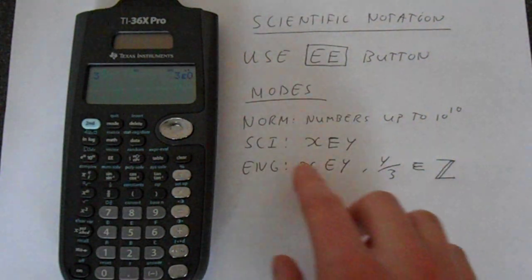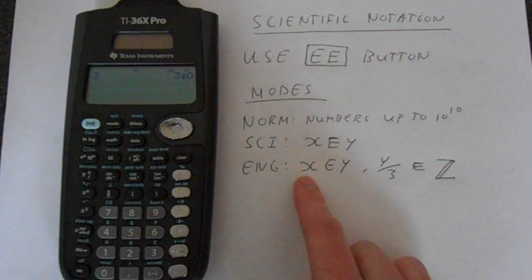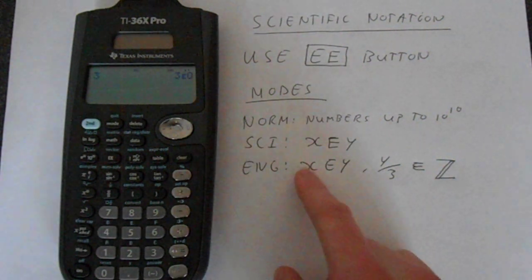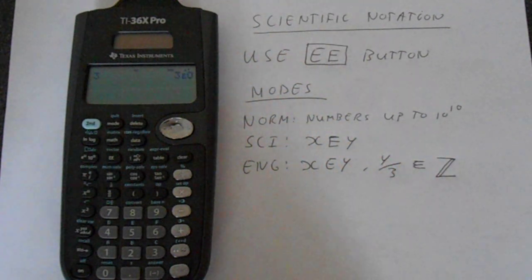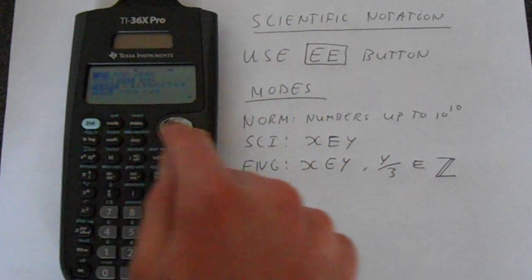And lastly, you've got the engineering notation. So this is the form something E something else, and the Y is always a power of 3. So Y divided by 3 is an integer. I'll just show you that quickly.